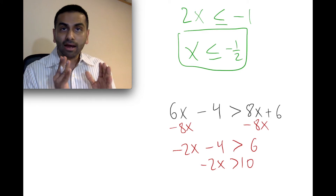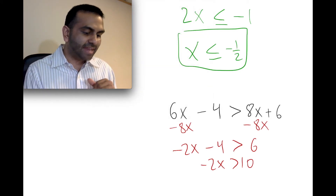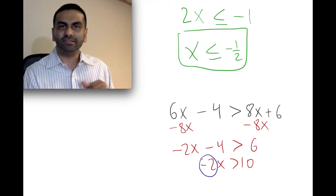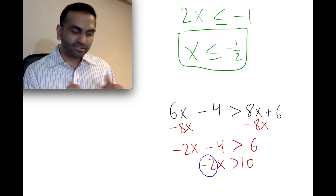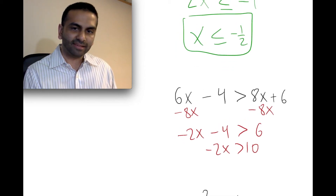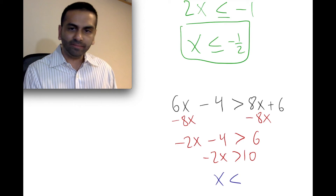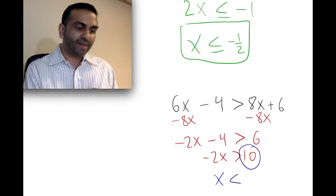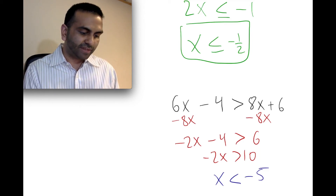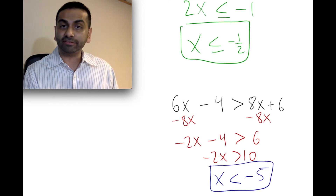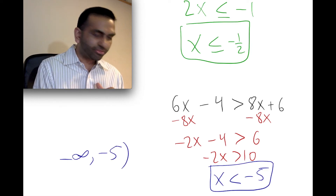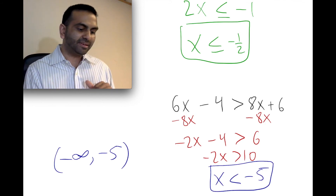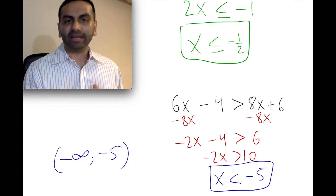Now we have to divide both sides by negative 2 to get x by itself. Because we're dividing by a negative, we're going to flip the sign — so instead of greater than, it becomes less than. So x is less than 10 divided by negative 2, which is negative 5. Our final answer is x is less than negative 5, which in interval notation would be negative infinity to negative 5. Both are smooth parentheses because this does not include negative 5.